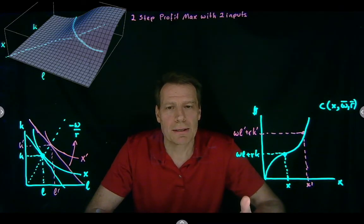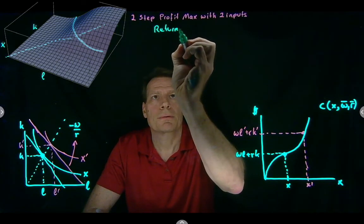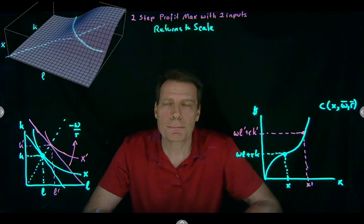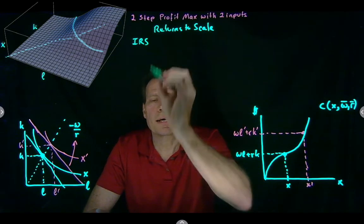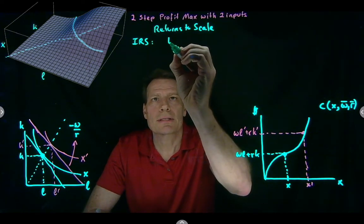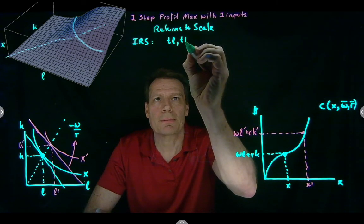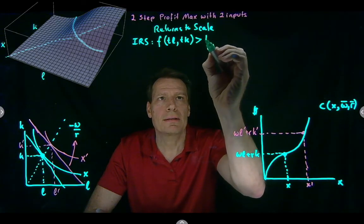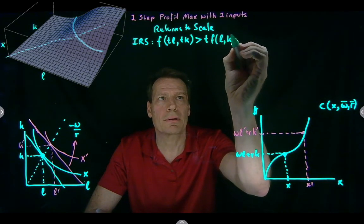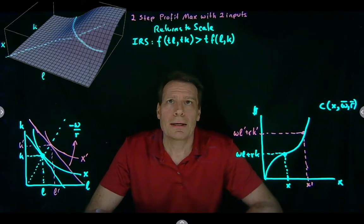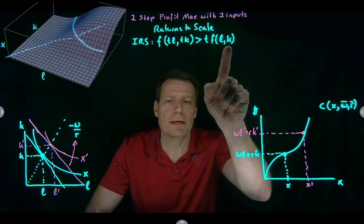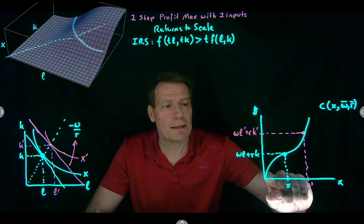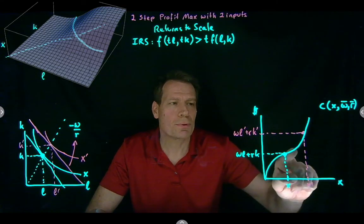What happens along that slice is related to a concept called returns to scale. Returns to scale is about what happens to output when we increase both labor and capital by the same proportion. Increasing returns to scale — IRS — means that when I increase labor by some factor t and increase capital by the same factor t, the output I get is greater than t times what I had originally. In other words, if I double my inputs, I'm going to more than double the output. It's getting easier and easier to produce. The slope along the slice is getting steeper and steeper, which means it's becoming less and less additionally costly as we produce more output.